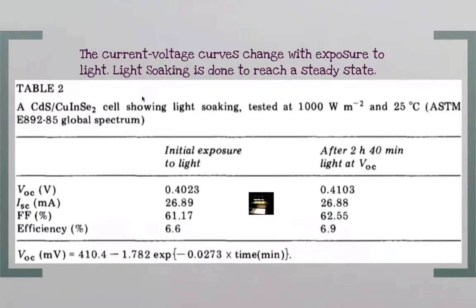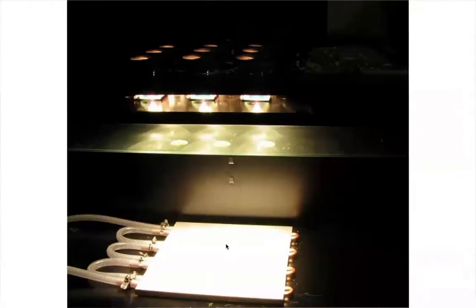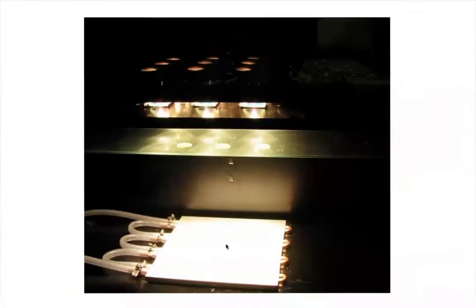One example is light soaking, common in chalcogenide thin film cells like CIS/CIGS. If you do a quick initial exposure and measure, you get an efficiency of, say, 6.6%. But if you expose the cell to about three hours of light and then measure, it's about 6.9% — quite a significant difference — with the fill factor actually improved. Companies actually leave the cell under a large lamp for many hours before packaging and selling it. This is common in CIS thin film cells, not so much for silicon.